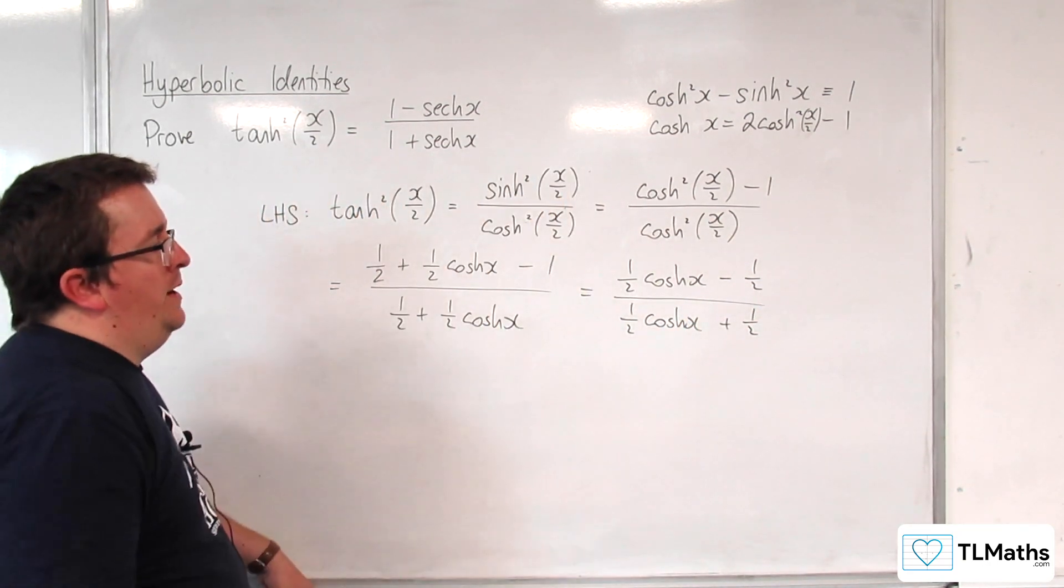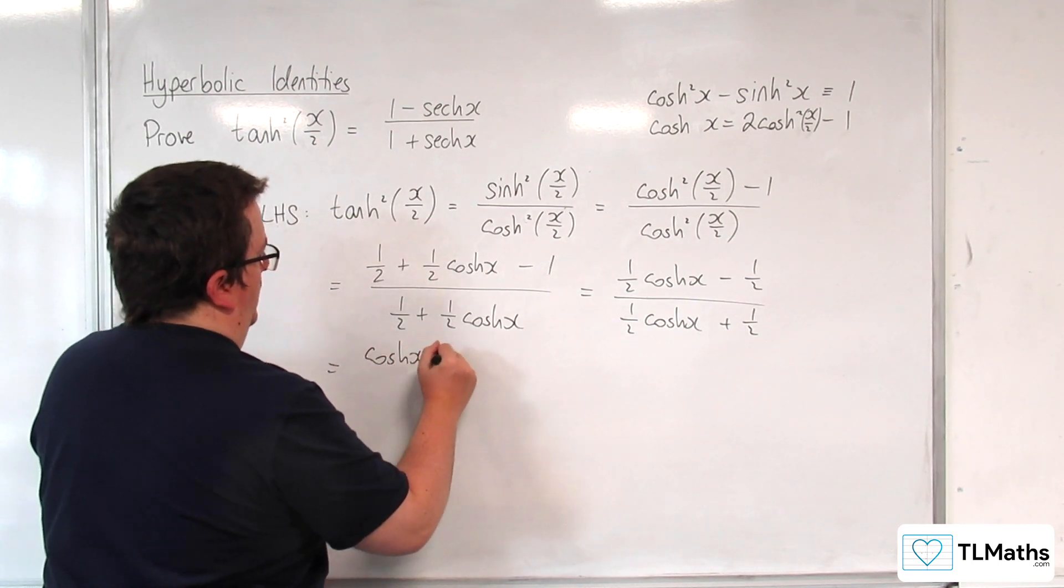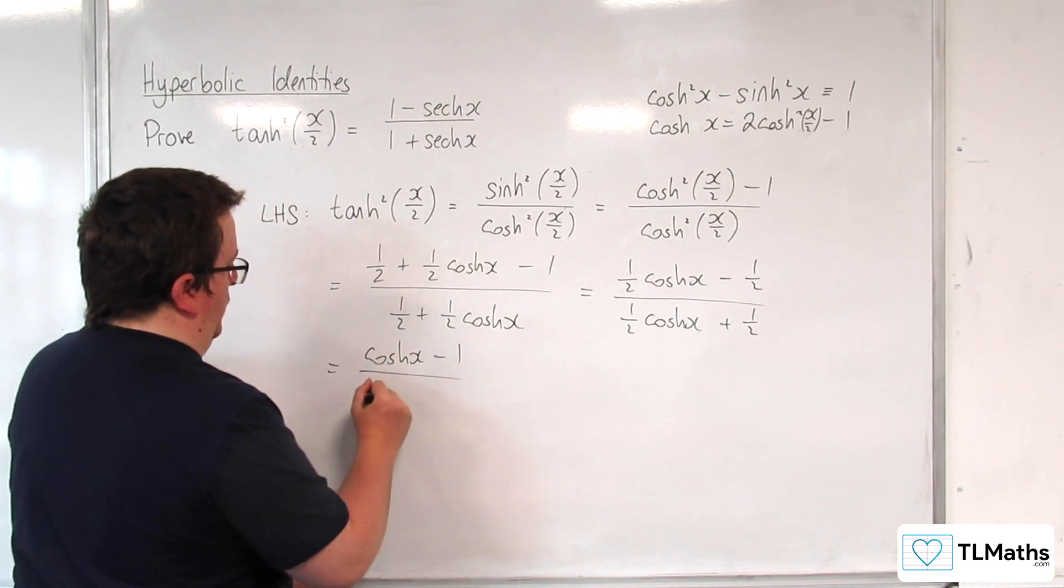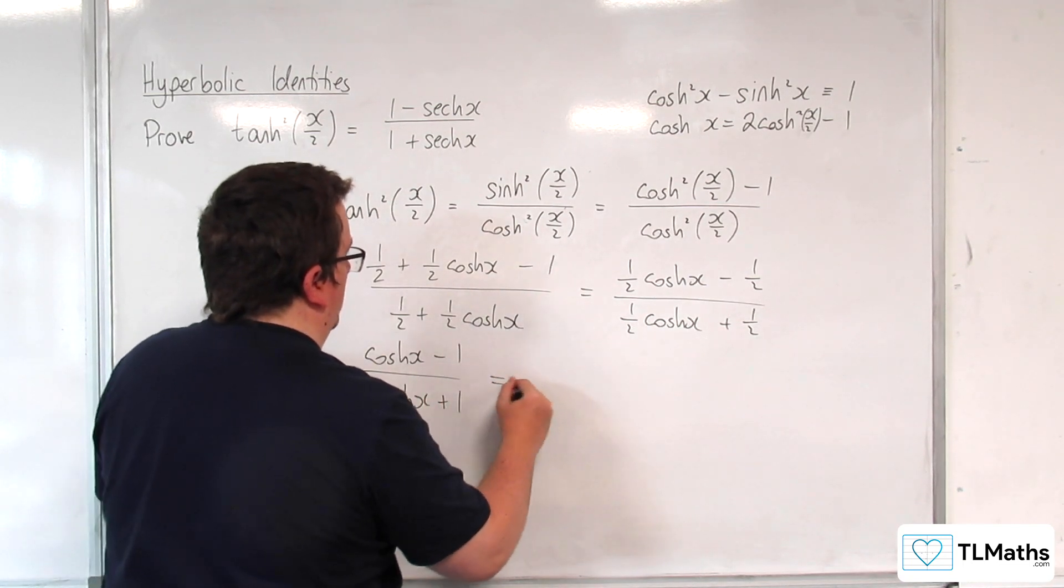I can multiply top and bottom by 2. So, cosh x take away 1 over cosh x plus 1. And now, I can divide top and bottom by cosh x.